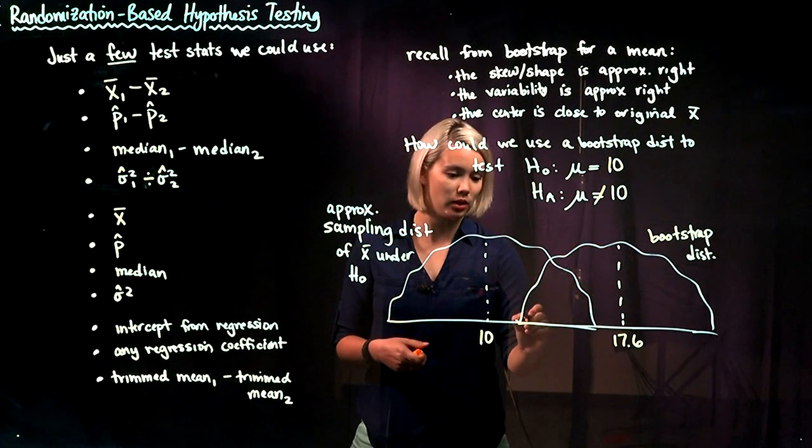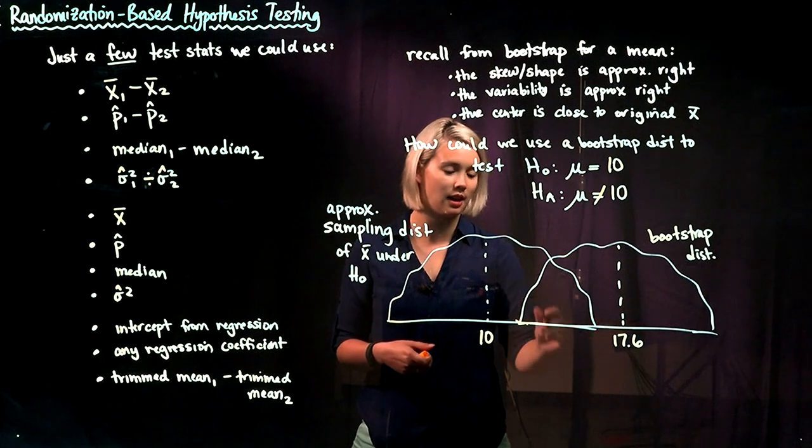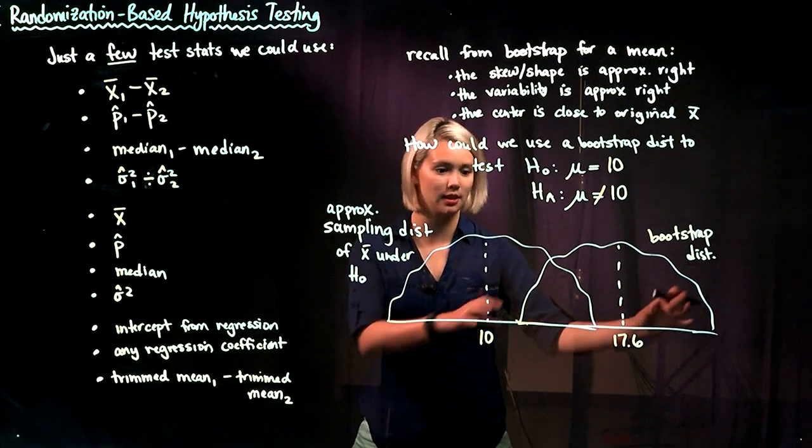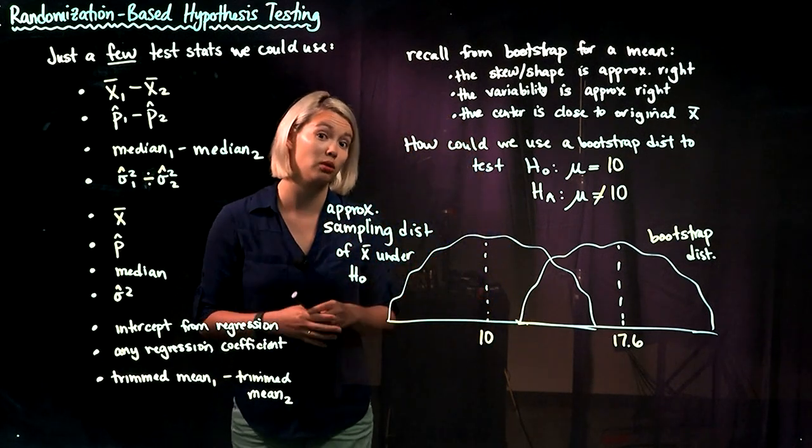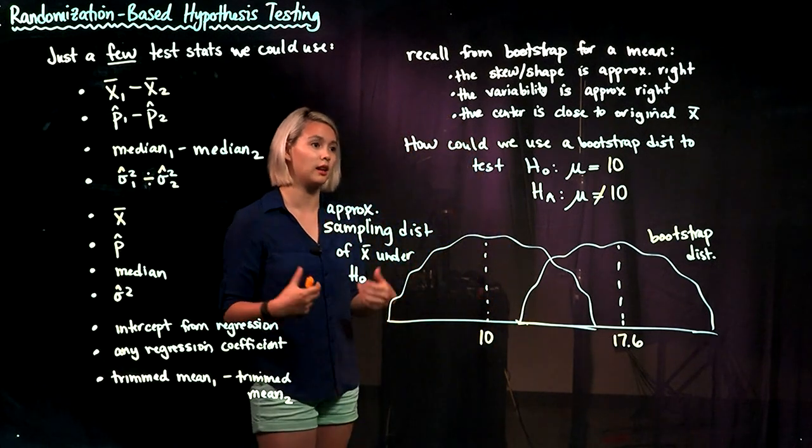All we would have to do is take each one of these test stats and subtract off 7.6 to scoot this whole distribution down to 10. That's just like one example of a way that we could use hypothesis testing in a creative way.